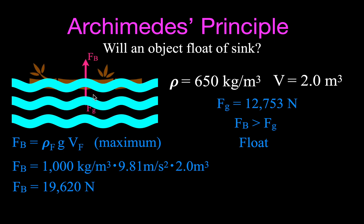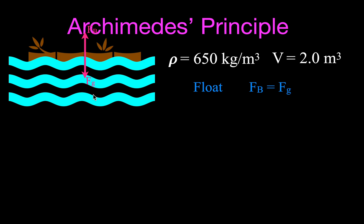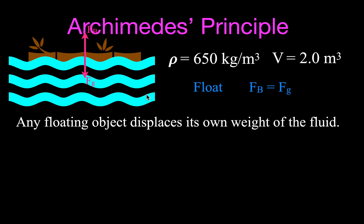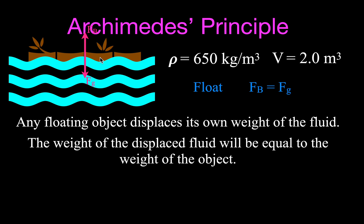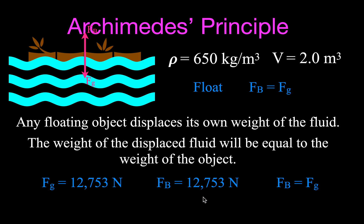When the object gets to the surface, the buoyant force and the weight force must be equal to each other. When an object floats, the weight and buoyant force are equal in magnitude but opposite in direction — any floating object displaces its own weight in the fluid. We can also say that the weight of the displaced fluid equals the weight of the object. Let's calculate the weight of the fluid displaced and show it equals the object's weight of 12,753 Newtons.